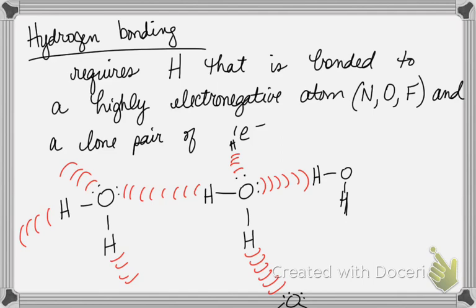I encourage you to read sections 11.1 and 11.2. There's an interesting article in your book about sickle cell disease, which you've probably heard about in biology. It's a single amino acid substitution that causes sickle cell, and certain populations are predisposed to it — it's a genetic thing.